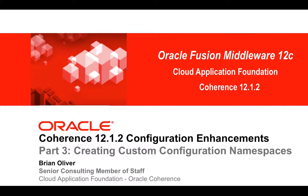Hi, this is Brian Oliver. Welcome to part 3 of our Coherence 12.1.2 configuration enhancement series. In this part we're going to talk about starting to create our own custom configuration namespace. This follows on from parts 1 and 2. In part 2 we started demonstrating the use of a configuration namespace, and in this part we're going to actually create one.